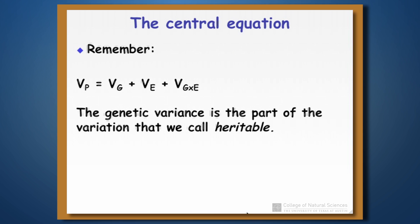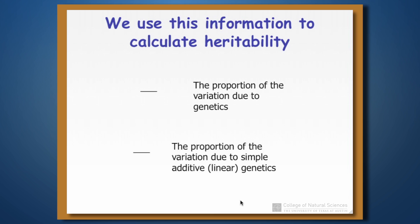When we left off last time we had this equation for population variation. We had the variance in the phenotype and we broke that down into a genetic and an environmental component and a genetic by environmental interaction term. What we want to find out is what the genetic component is, because the genetic variance is the part of the variation that is heritable — the part that can be inherited from one generation to the next. We're going to use that information about heritability to say something about what proportion of the phenotype is heritable.